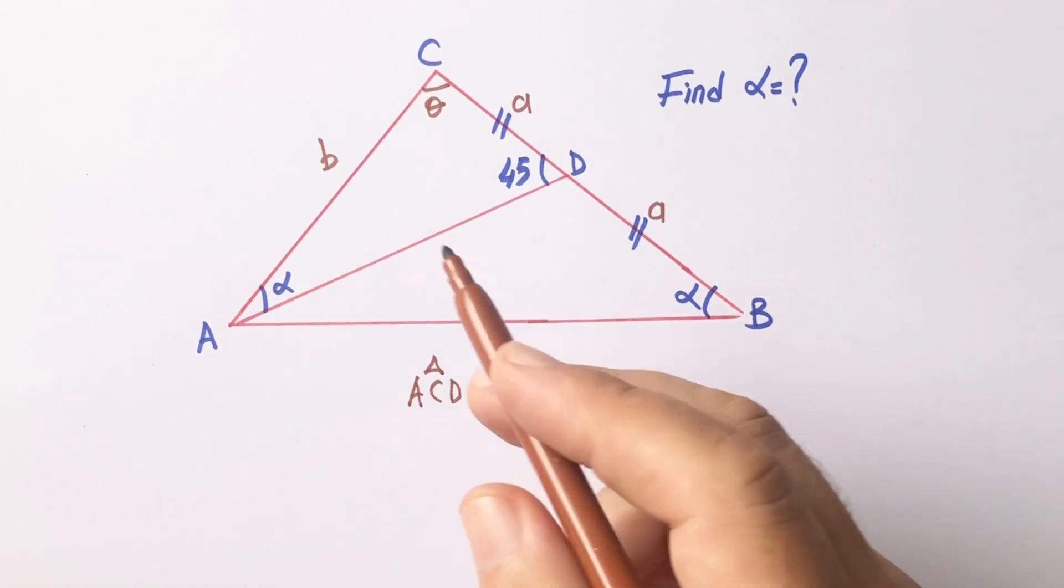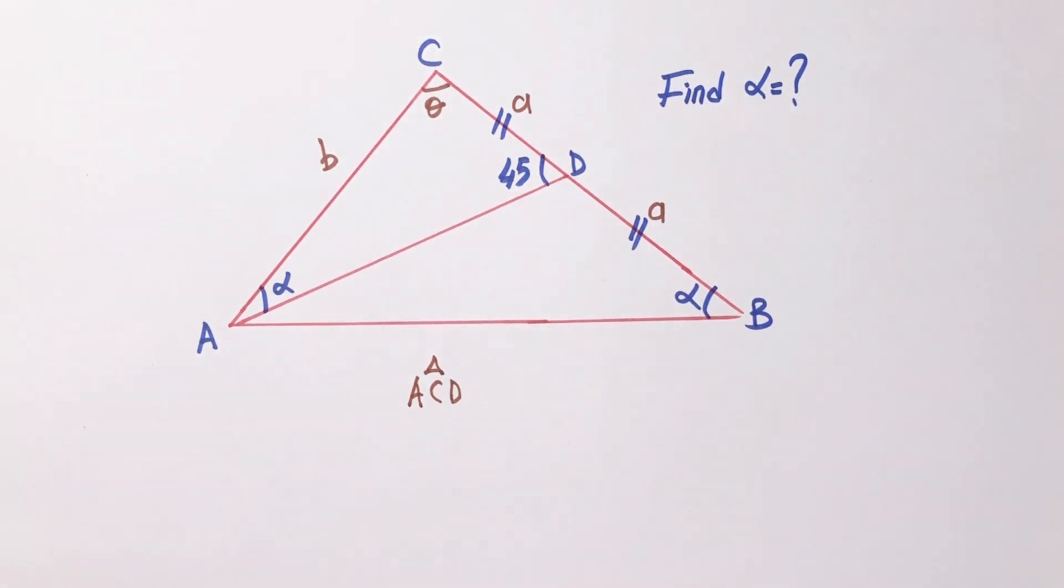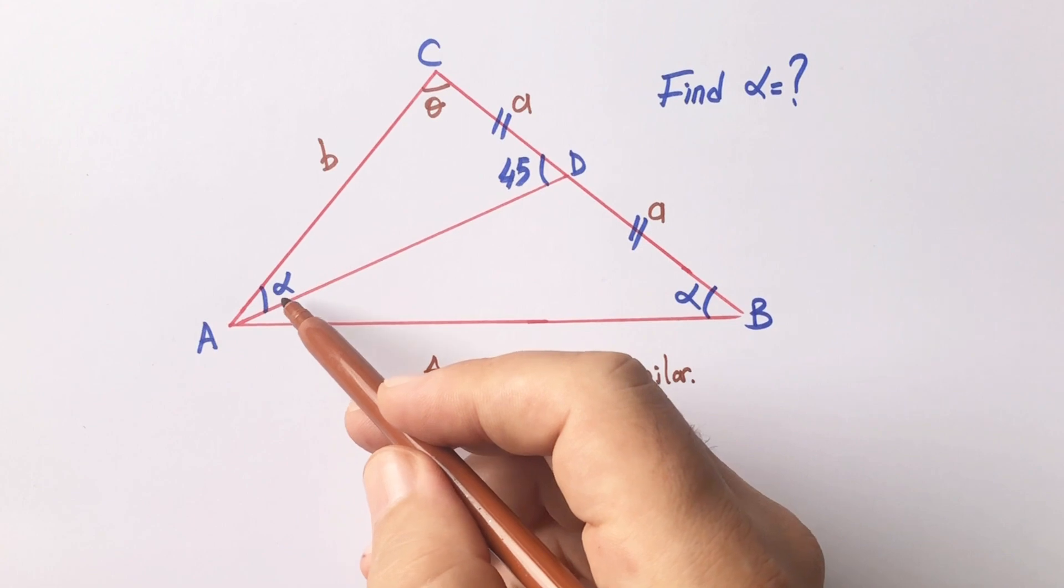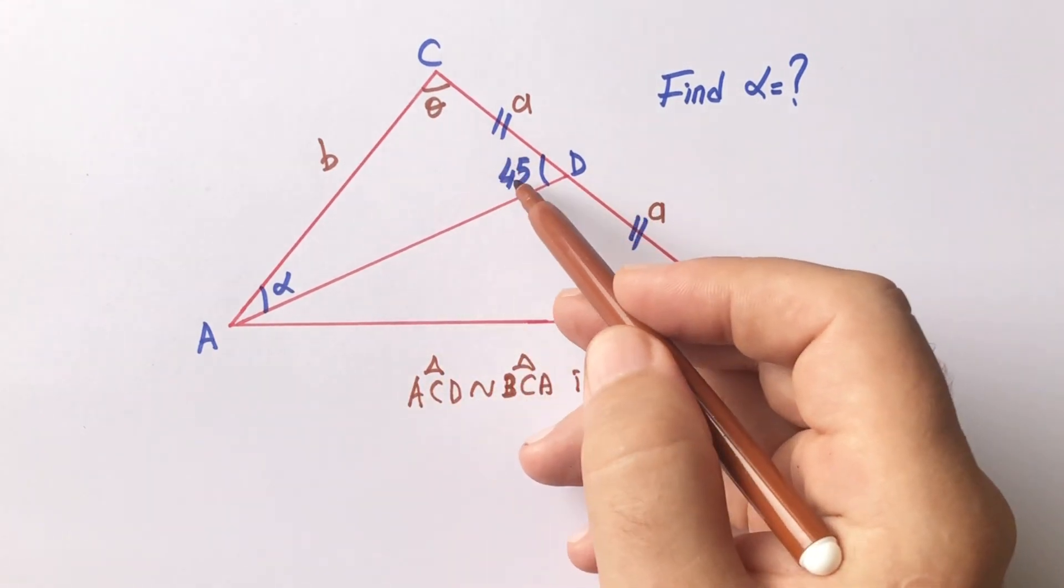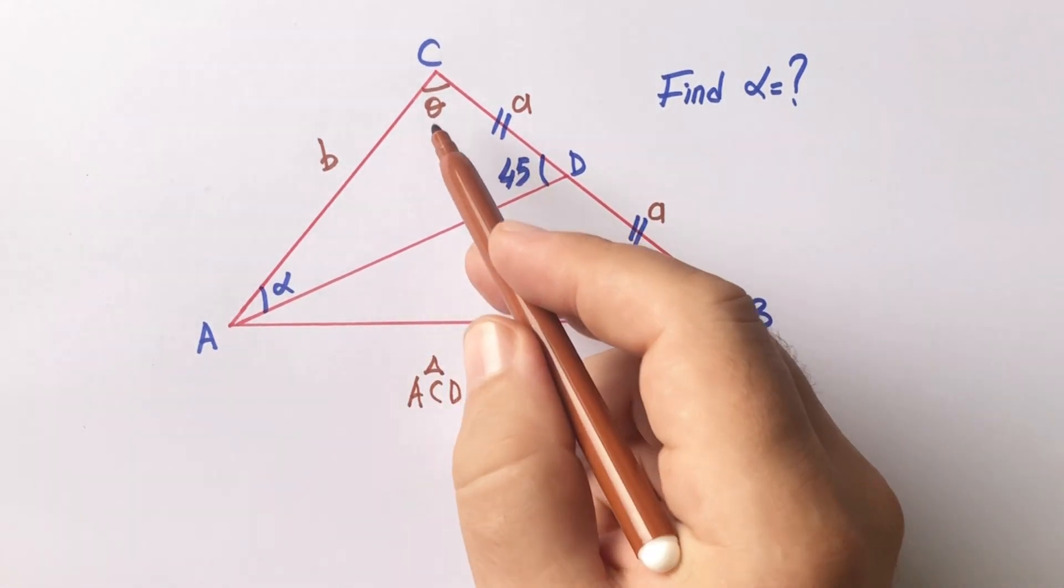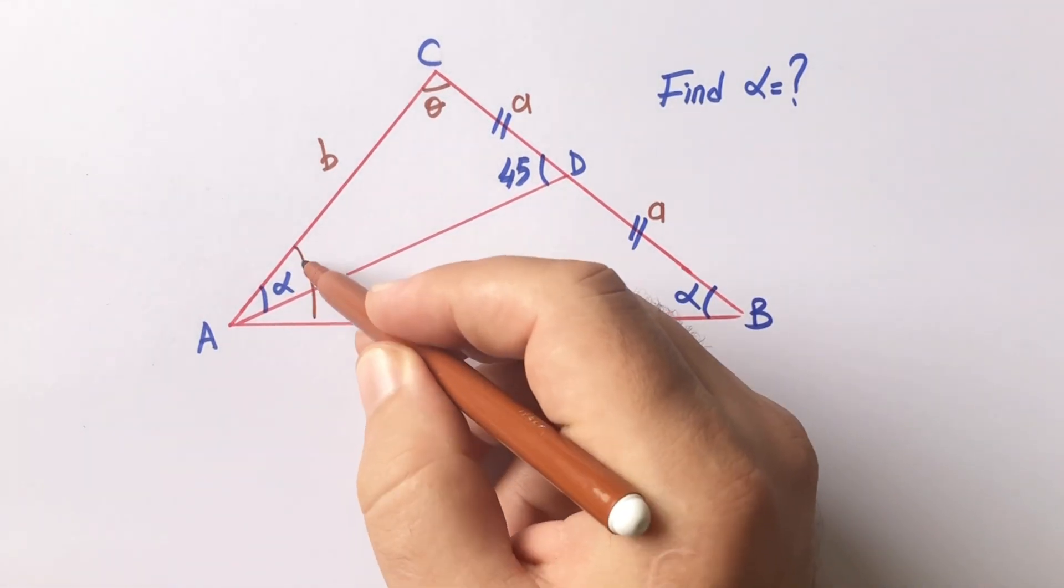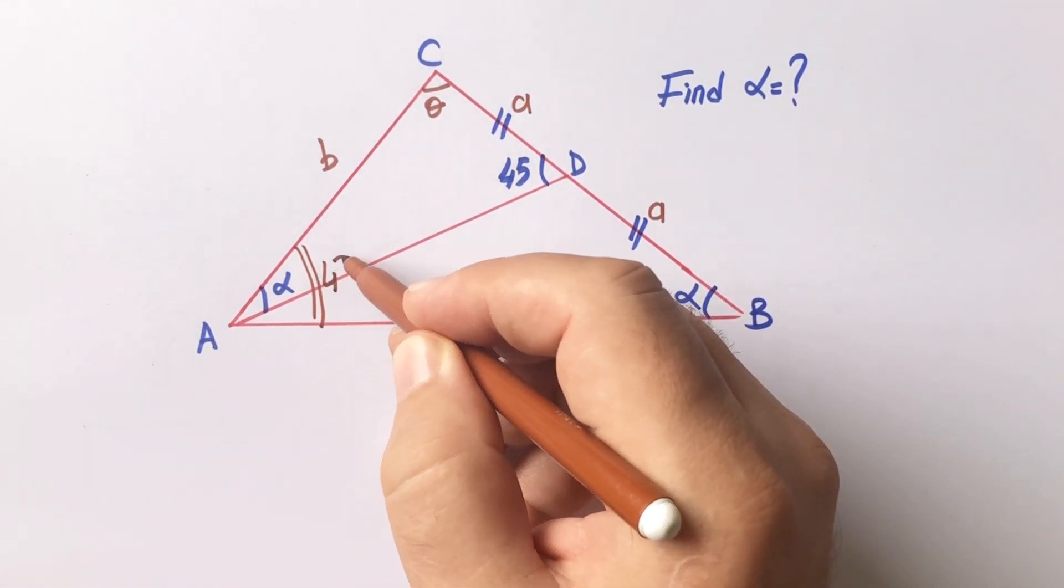Why? Because they have same angles. Similar. Alpha, theta, 45 degrees, and if you focus on the biggest triangle, theta, alpha, and 45 degrees.